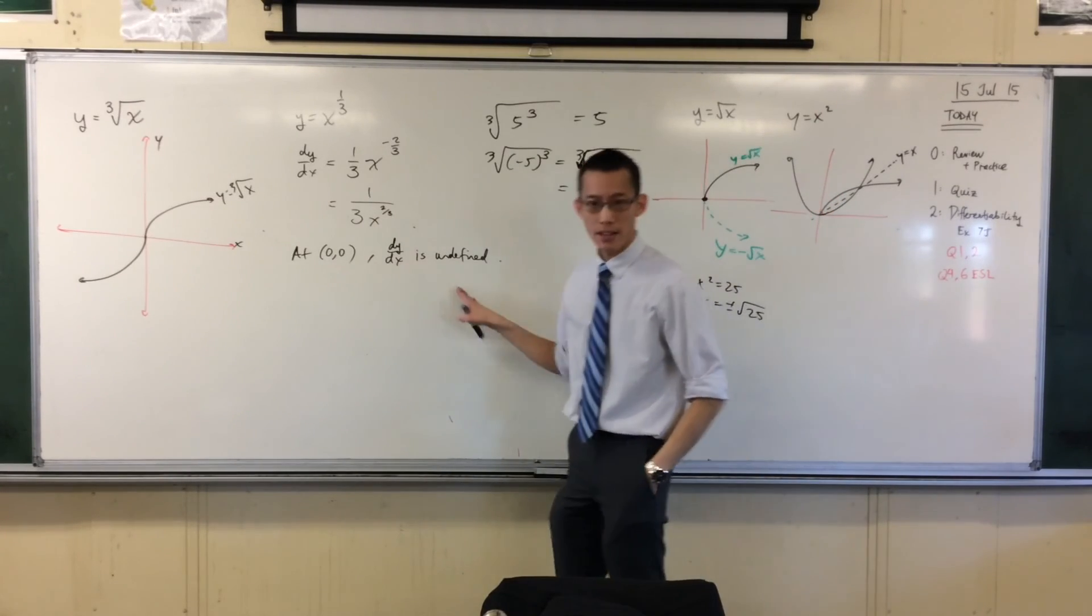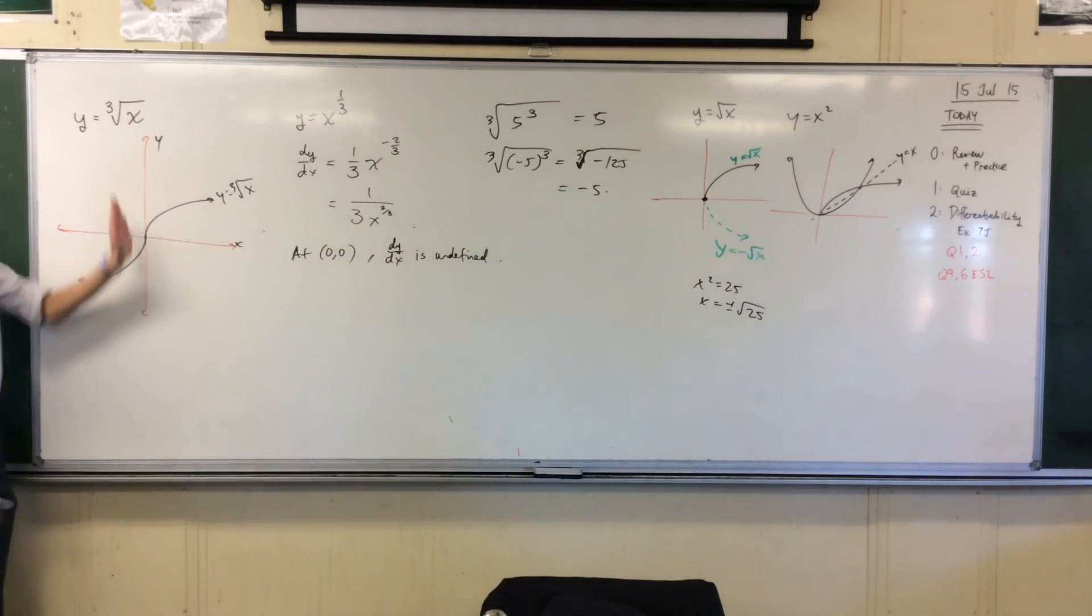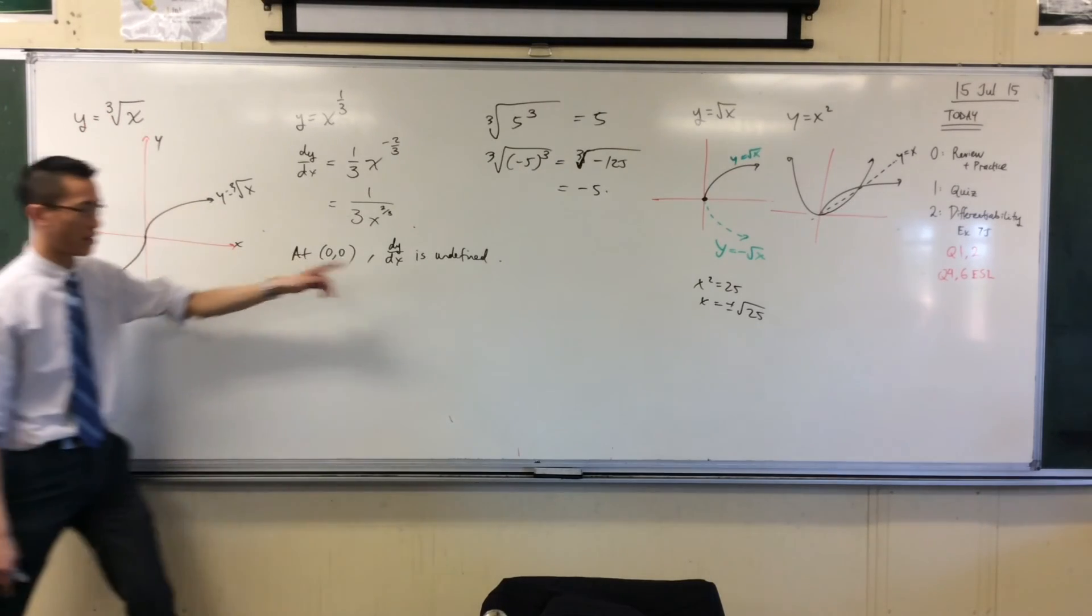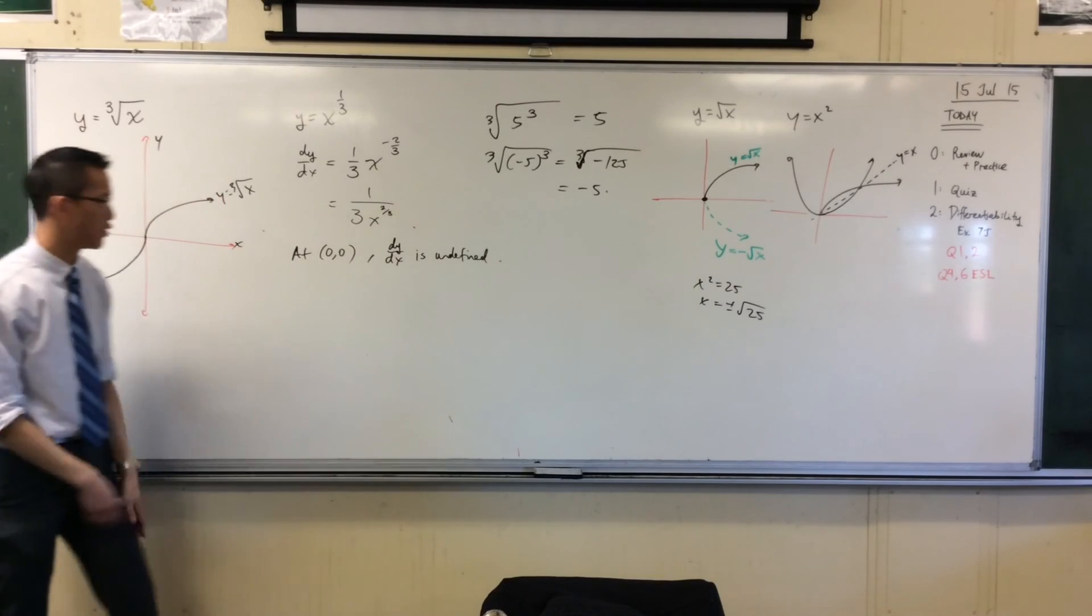So it's undefined, and that shouldn't be surprising, because as you told me before, the tangent is a vertical line. What's the gradient of a vertical line? It's undefined because it doesn't have a run. There's no run on the denominator, so therefore you can't divide.